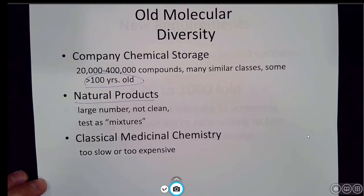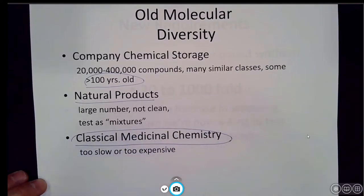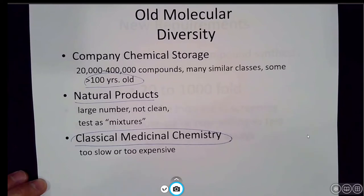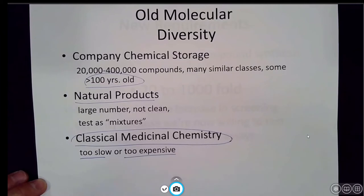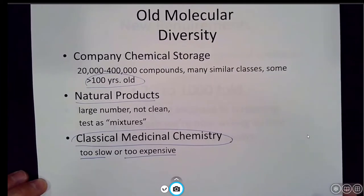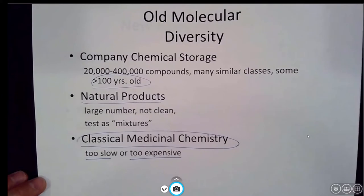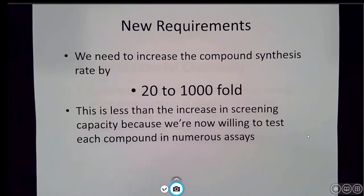So classical medicinal chemistry - that is making just a couple compounds a month, or extracting natural products as not really clean mixtures, and having all these compounds stuck in storage - was very inefficient, far too slow, and also too expensive. In today's requirements, since the turn of the century, we've had to really increase the synthesis rate by 20 to a thousand fold. This is really due to advances in proteomics, in genomics, and as we understand and unravel new structures.